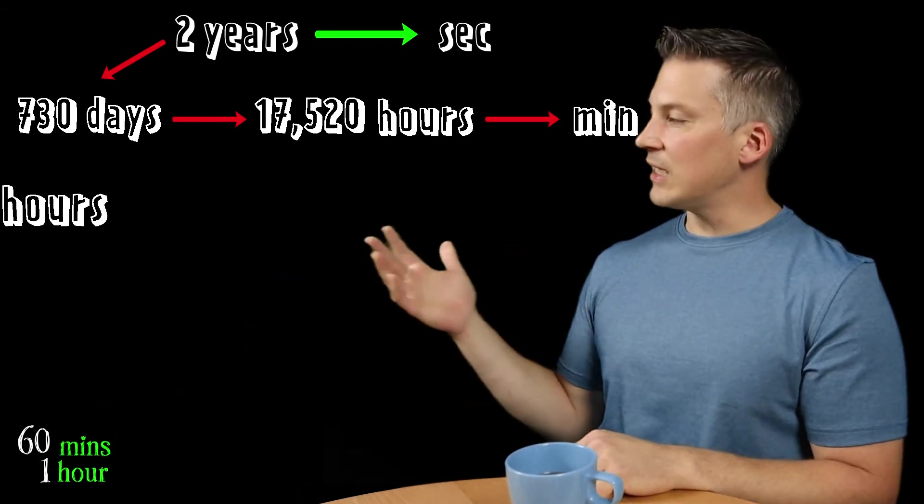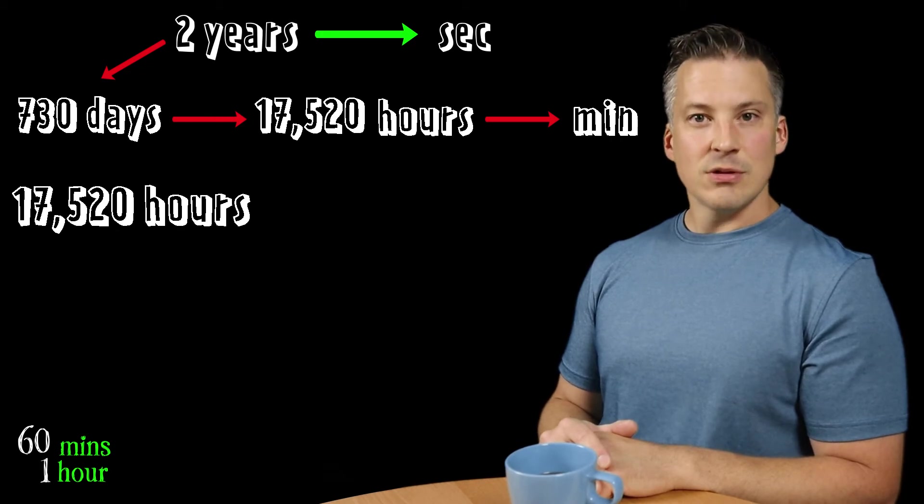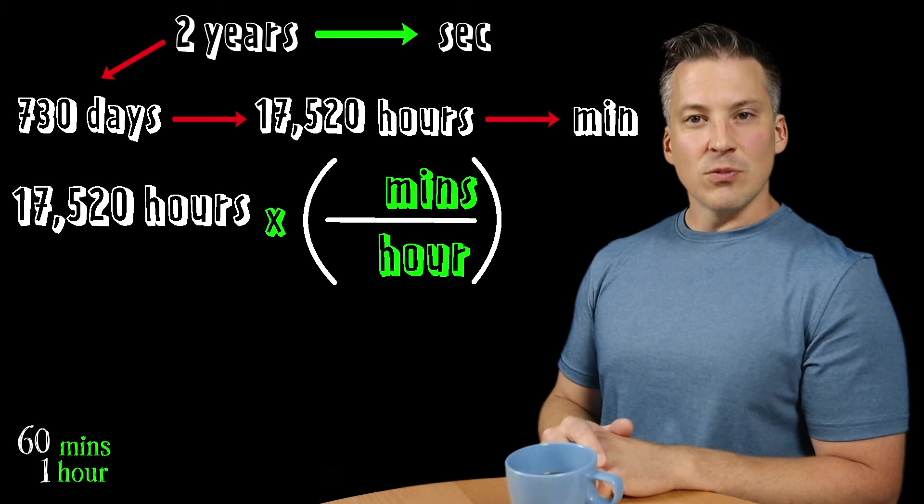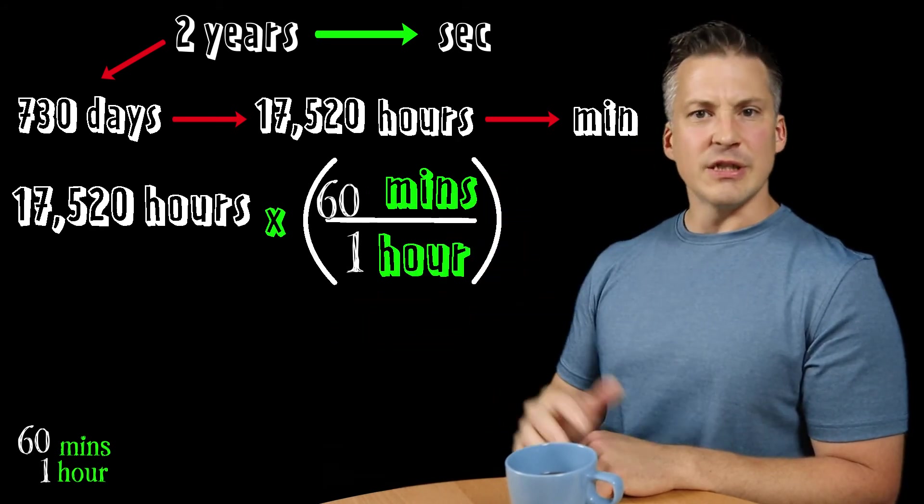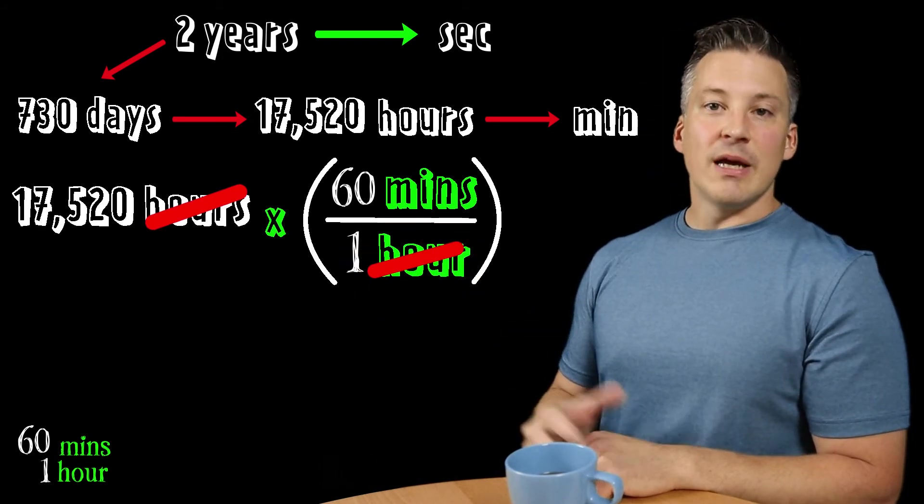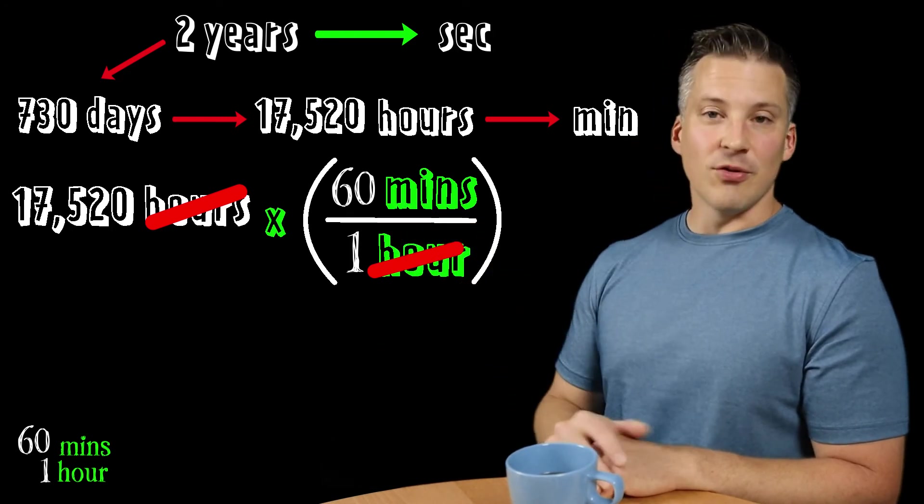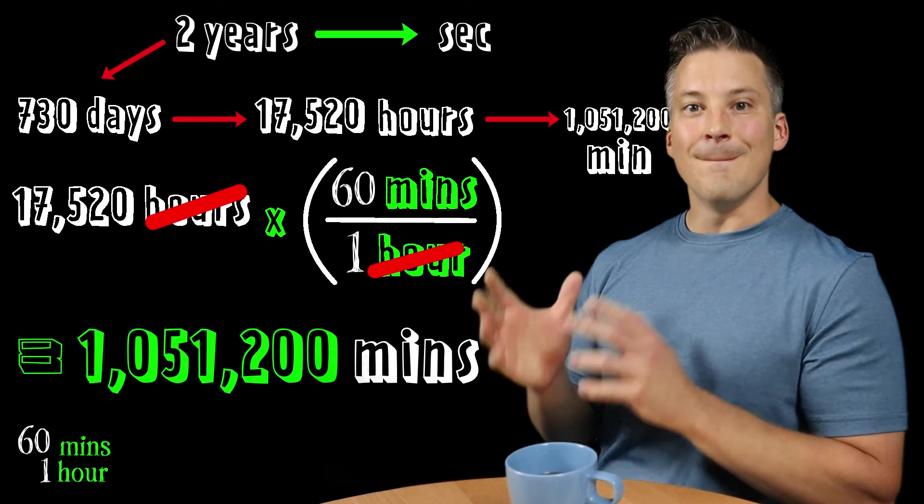So once we know that relationship, we can now convert from hours into minutes. And it's the same process. We write down the given value, the 17,520 hours. We're going to multiply that by our conversion fraction. We put in the units. We're going to have hours on the bottom, minutes on the top. For every one hour, there's 60 minutes. Notice how the hours cancel. And now we're going to be left with our unit of minutes. And notice how when we multiply that across, we get a value of about 1,051,200 minutes.